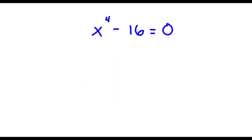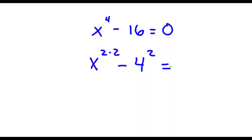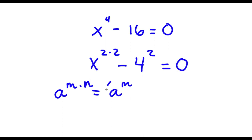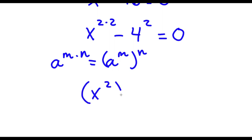Alright, so I have x to the power of 4 minus 16 is equal to 0. Now x to the power of 4 is the same thing as x to the power of 2 times 2, because 4 is 2 times 2, and 16 is the same thing as 4 to the power of 2. Using the rule a to the power of m times n equals a to the power of m to the power of n, I write x to the power of 2 times 2 as x squared to the power of 2, minus 4 squared equals 0.